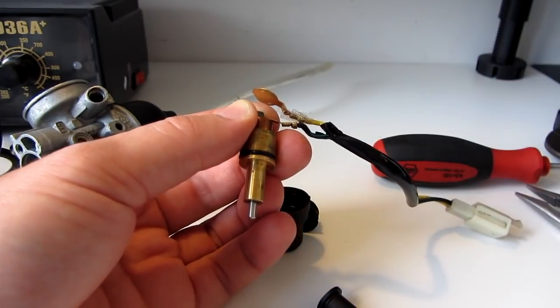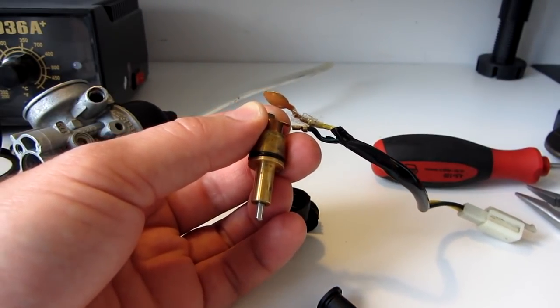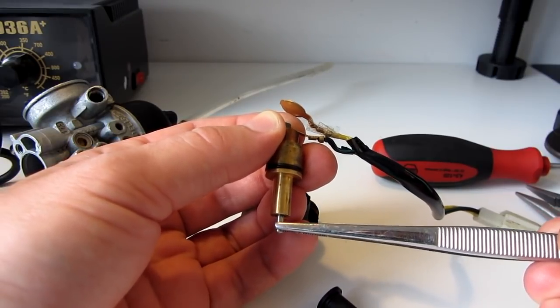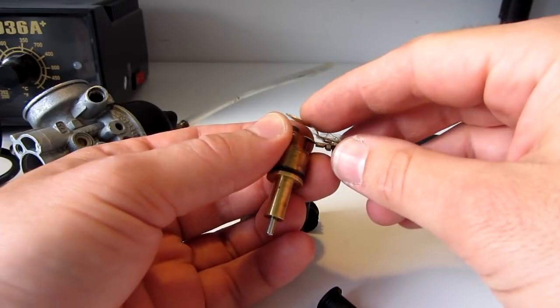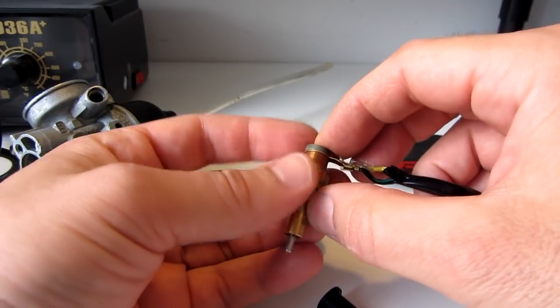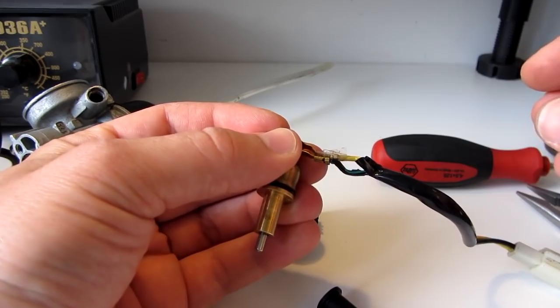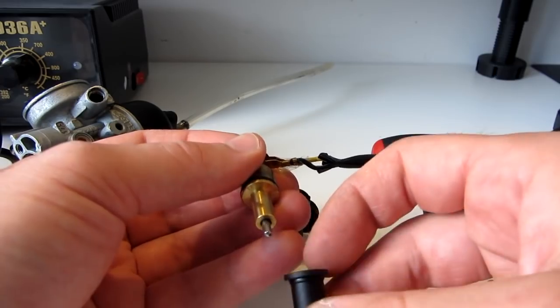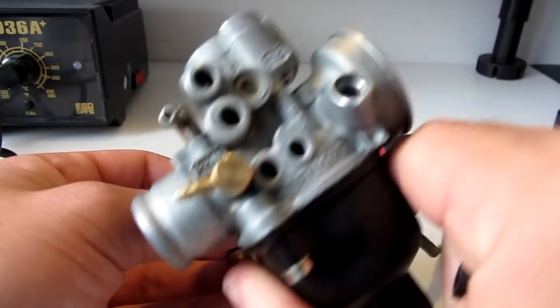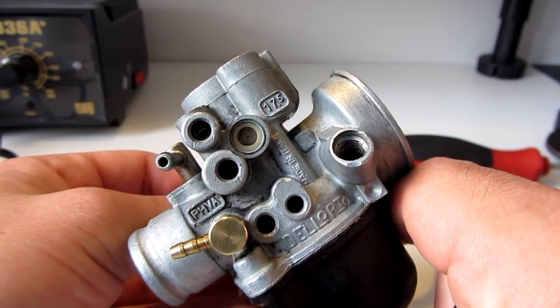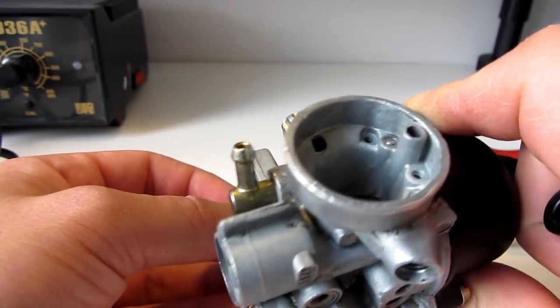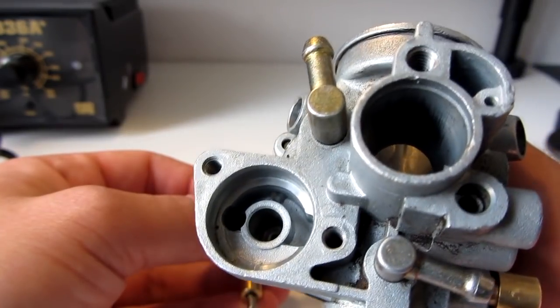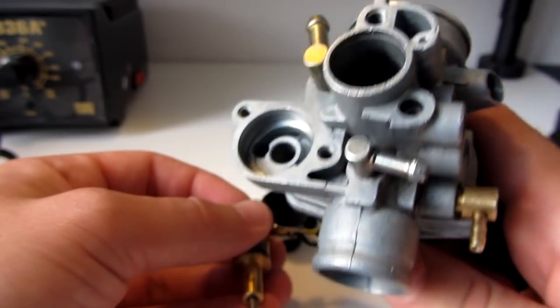As you can see here, this one goes out like this. So that's about it, about the automatic choke in the Delorto carburetor. This one is 17.5 but probably all the two-stroke carburetors are the same.